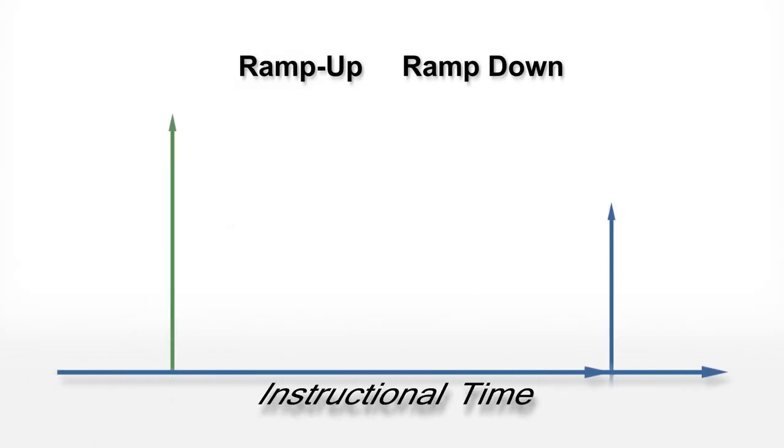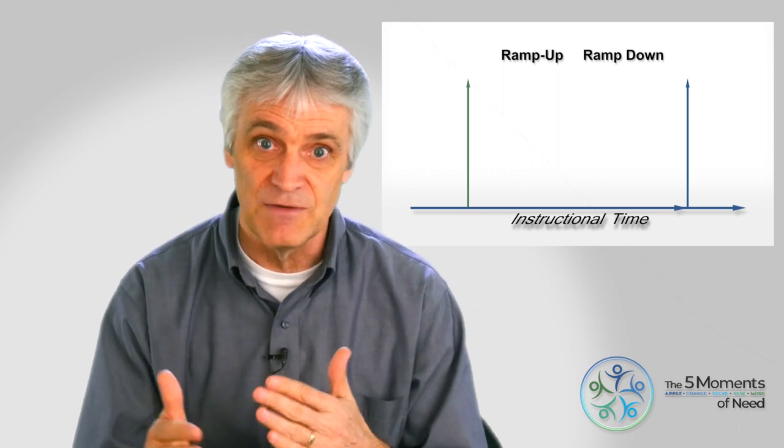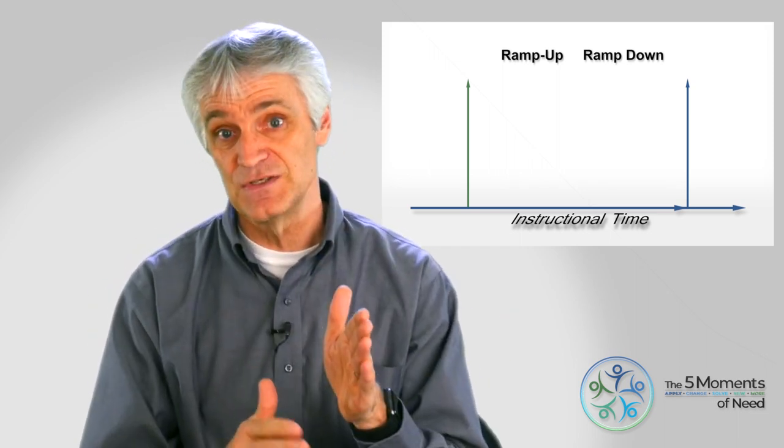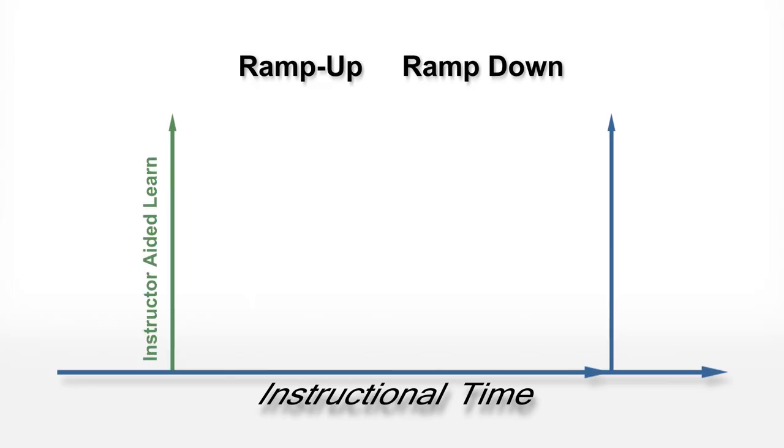Basically what happens is there are three axes we have to watch during a classroom. The axis along the bottom, of course, is time. That's how long a class takes: eight o'clock to five in a one-day course, Monday to Friday in a five-day course. The axis on the left represents the degree to which the instructor supports the learners in their learning.